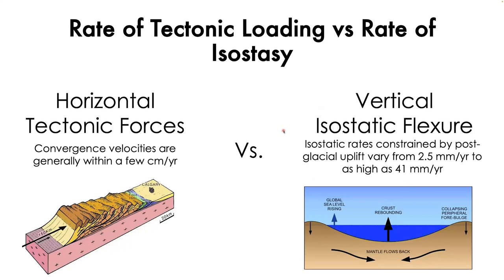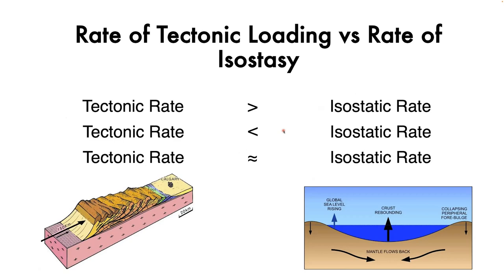Matching isostasy with fold and thrust belts: when we form a fold and thrust belt, we apply a load on the crust by stacking thrust sheets, which prompts an isostatic response. This is really a competition between two forces: tectonic forces — the convergence rate and how quickly we stack thrust sheets — versus isostasy — how quickly and to what extent the lower crust and mantle compensate. From post-glacial rebound, uplift can vary from 2 to 5 mm/year, in some cases as high as 41 mm/year. What if the tectonic rate is fast but the lithosphere responds slowly? What if the fold and thrust belt forms synchronously with isostatic subsidence?